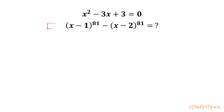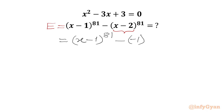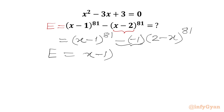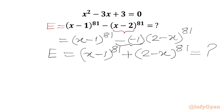Let us get started by writing the required expression equal to E. I will take -1 common from the second bracket. Since 81 is an odd number, we get a -1 outside, giving us (x-1)^81 - (-(2-x))^81, which simplifies to (x-1)^81 + (2-x)^81. This is the expression we are going to calculate.